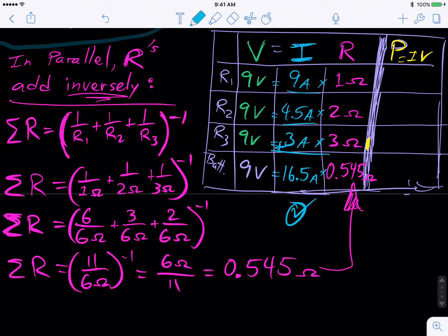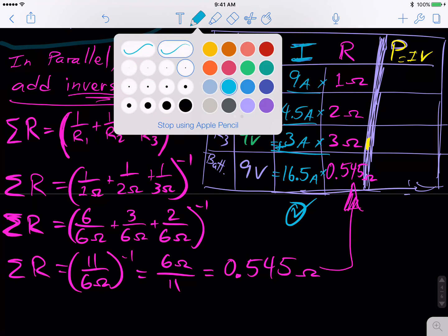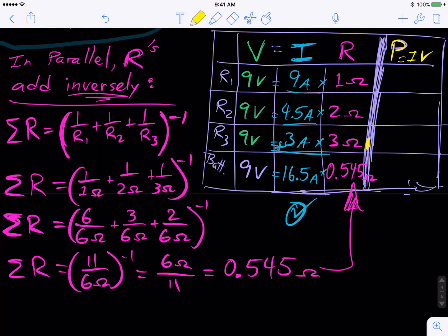Now let's continue. Let's make it a VIRP chart with that P and let's find the power that is dissipating across each resistor. And then if these were light bulbs, we could imagine and predict which light bulb would be the brightest if we were to wire them in parallel. So P is I times V. We're going to have I times V for each row. Nine times nine is a whopping 81 watts. That's huge. Nine times 4.5 is going to be 40.5 watts. Nine times three is going to be 27 watts. And then nine times 16.5 is going to be 148.5 watts.